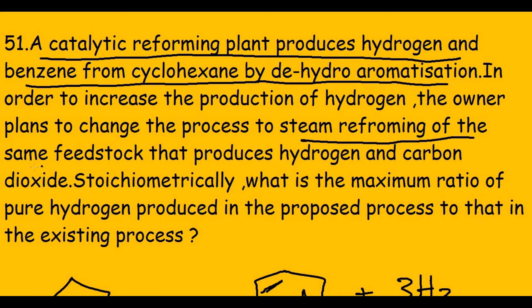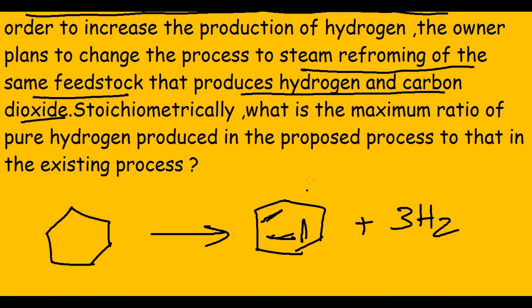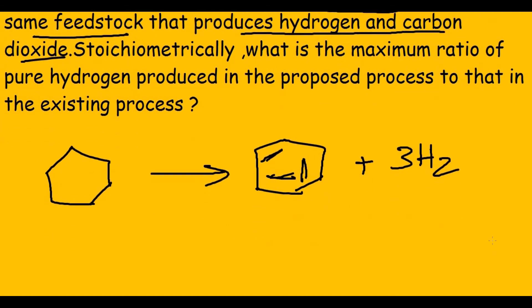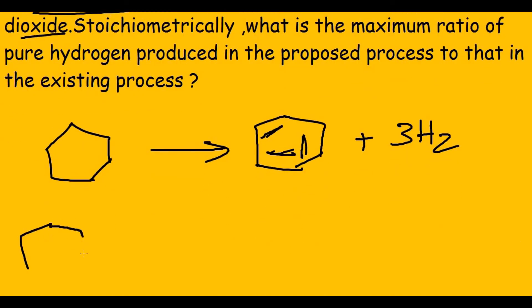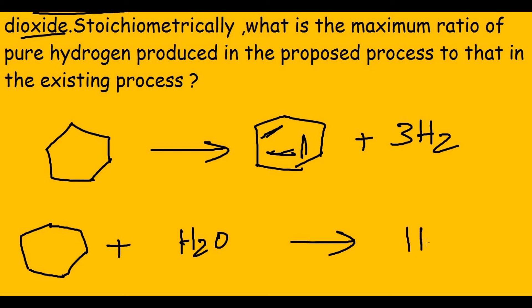In order to increase hydrogen production, the owner plans to change to steam reforming of the same feedstock, which produces hydrogen and carbon dioxide. The new reaction involves cyclohexane plus steam producing H2 and CO2. Now the tough part is balancing this equation.